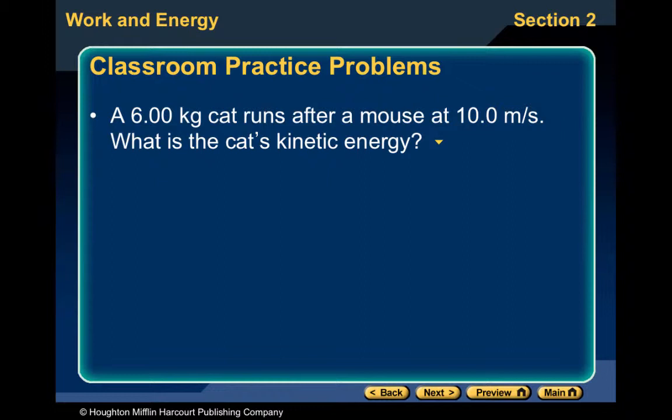A six-kilogram cat runs after a mouse at 10 meters per second — what's the cat's kinetic energy? Take one-half times the mass times velocity squared and you should get 300 joules.